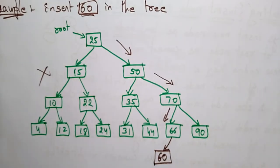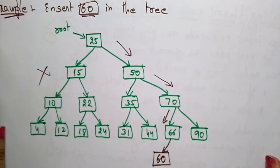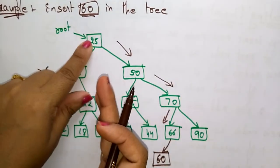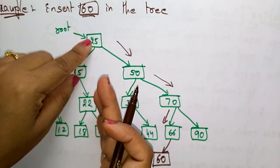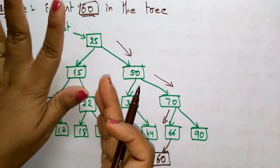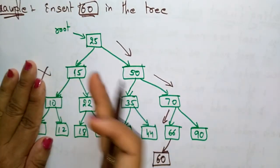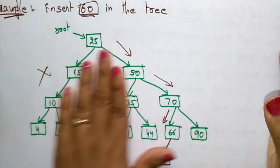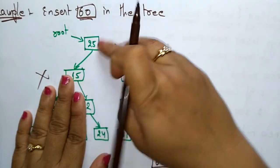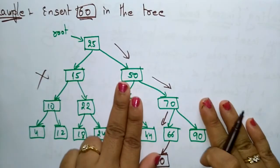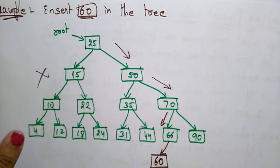So this is how you insert an element in the binary search tree. First check the root node — is the inserted value less than or greater than the root? If it is less, focus on the left subtree and discard the right. If the inserted value is greater than the root node, then think about the right subtree and discard the left subtree. This is about insertion.